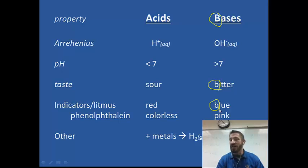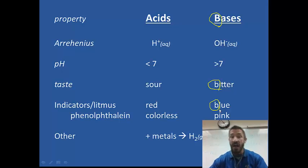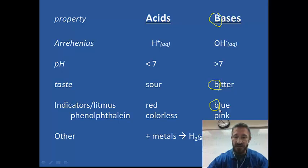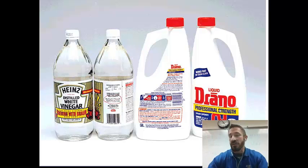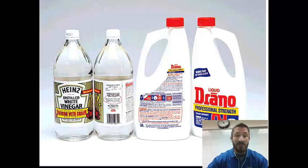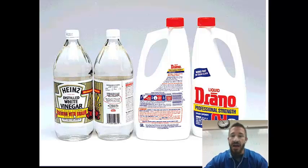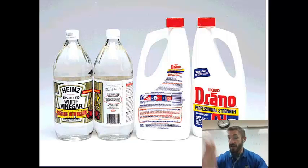So what I'm going to do next is look at some common everyday things and classify them as either acids or bases. First, we have vinegar and Drano. Vinegar is actually an acid — it's the same thing as acetic acid. And Drano is a base. So that's one acid and one base.